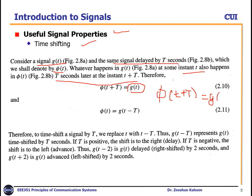So it means that if we have a signal g(t) delayed by T seconds, the delayed signal and the original signal will be equal at time instant t plus T. We can write phi(t) equals g(t minus T), because we replace t with t minus T. So to time-shift a signal by capital T, we replace t with t minus T.